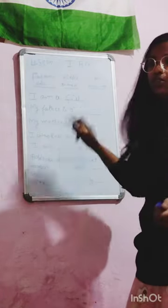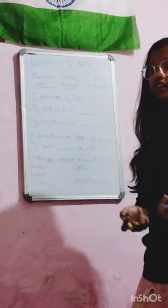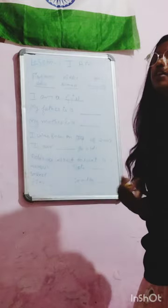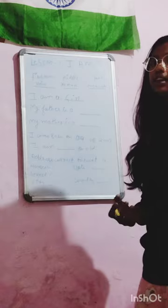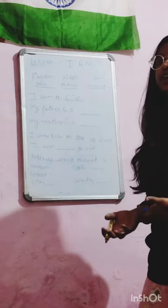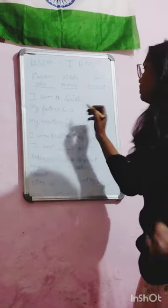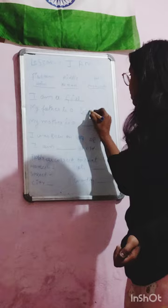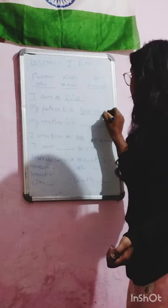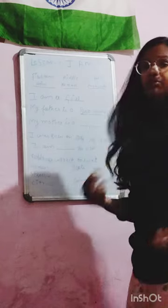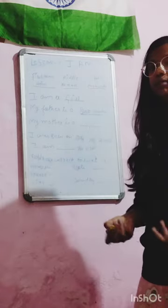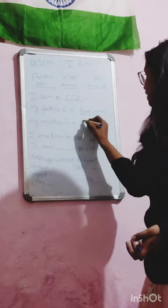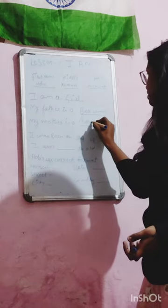My father is — who is my father? I am talking about his occupation, what does he do in his work. So my father is a businessman. We can also write who is my mother — my mother is simply a homemaker. So I will write here: my mother is a homemaker.